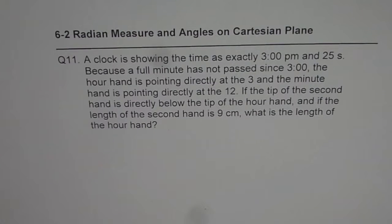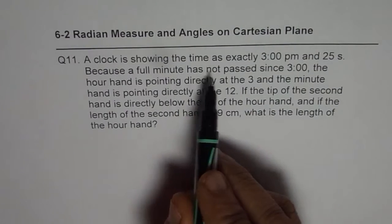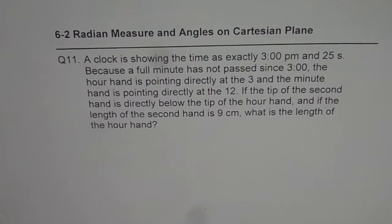Question 11 is: a clock is showing the time as exactly 3 PM and 25 seconds. Because a full minute has not passed since 3, the hour hand is pointing directly at 3 and the minute hand is pointing directly at 12. If the tip of the second hand is directly below the tip of the hour hand, and if the length of the second hand is 9 cm, what is the length of the hour hand?